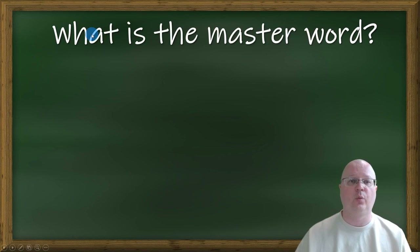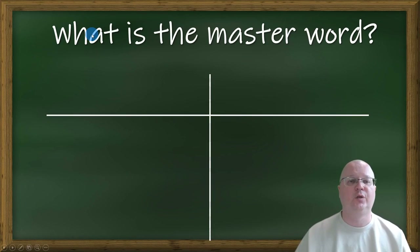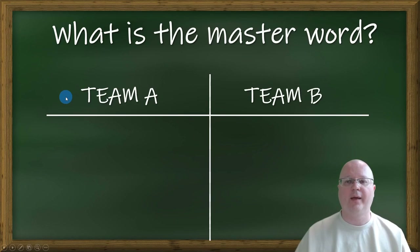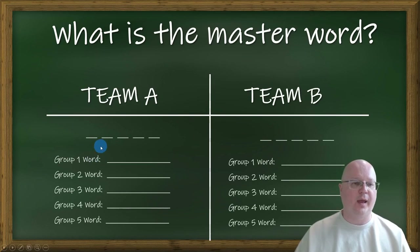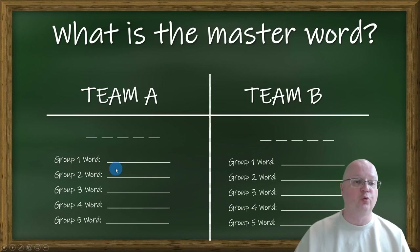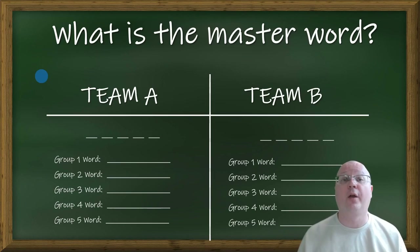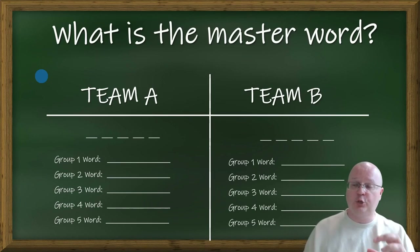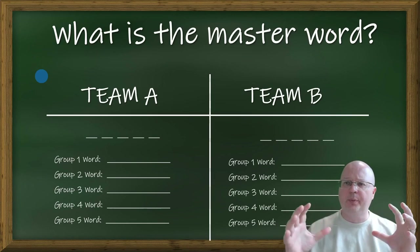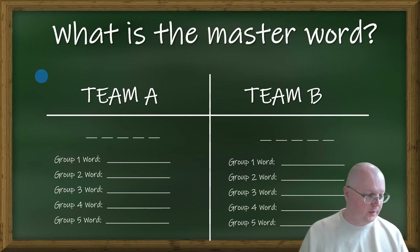Write down what the master word is. Divide it into two halves — here we have team A and here we have team B. This is where they need to write the master word, and also they need to write all the group words here. They need to work together as one team and put all the missing pieces together.